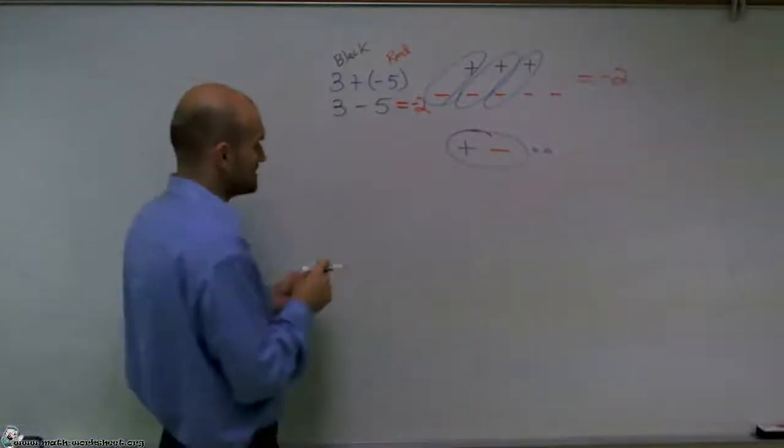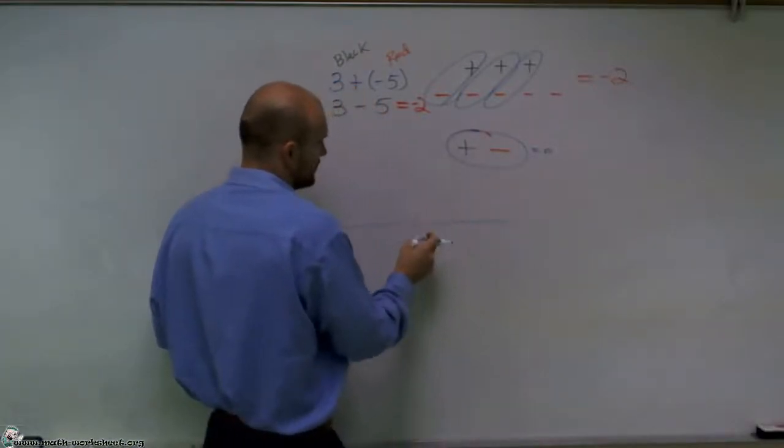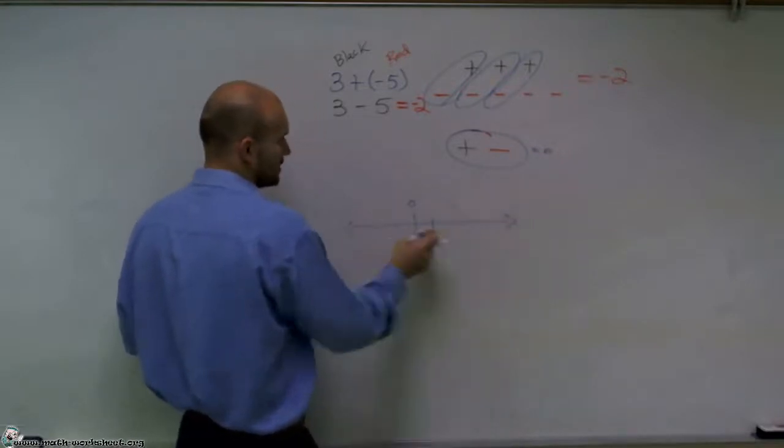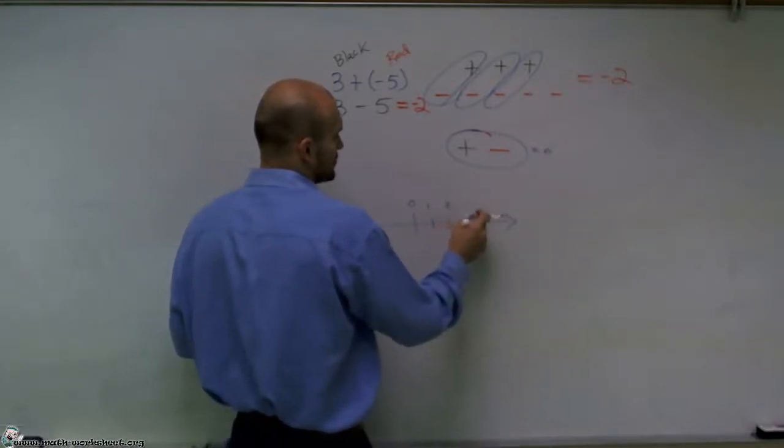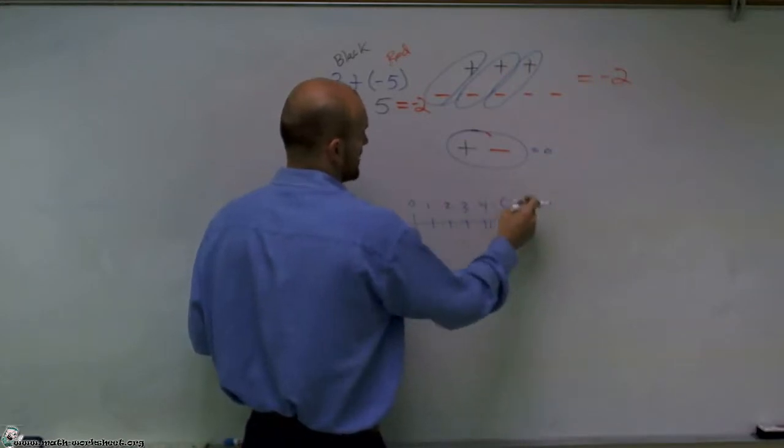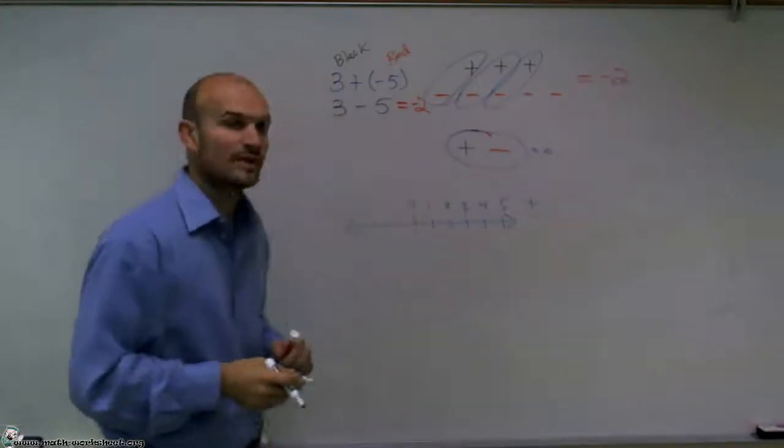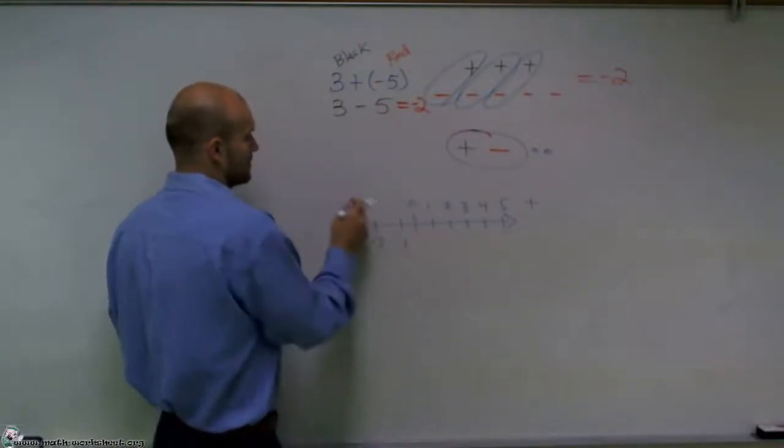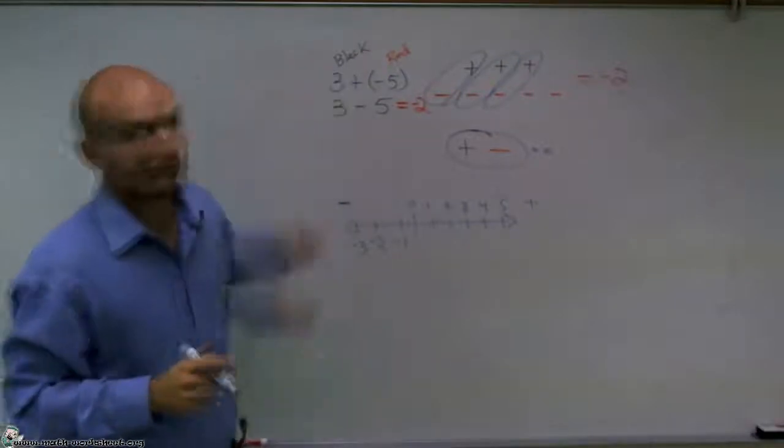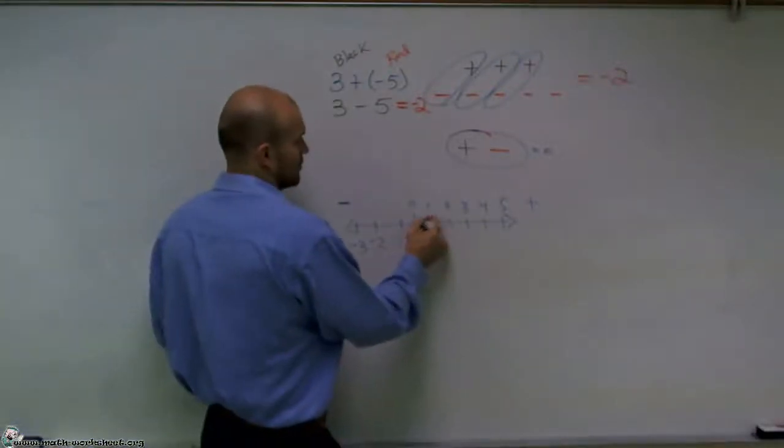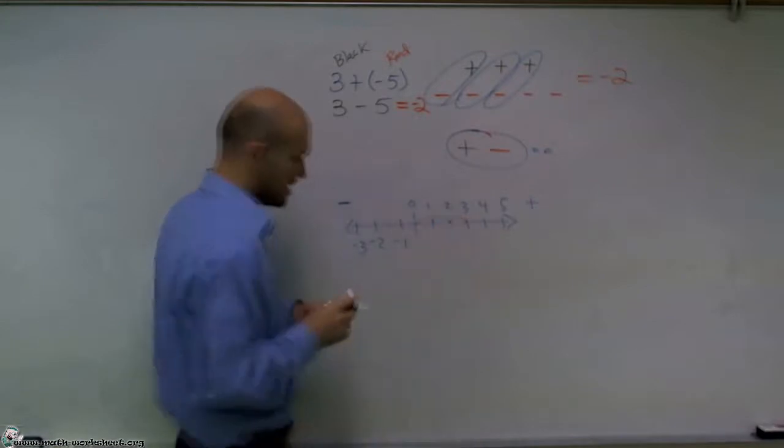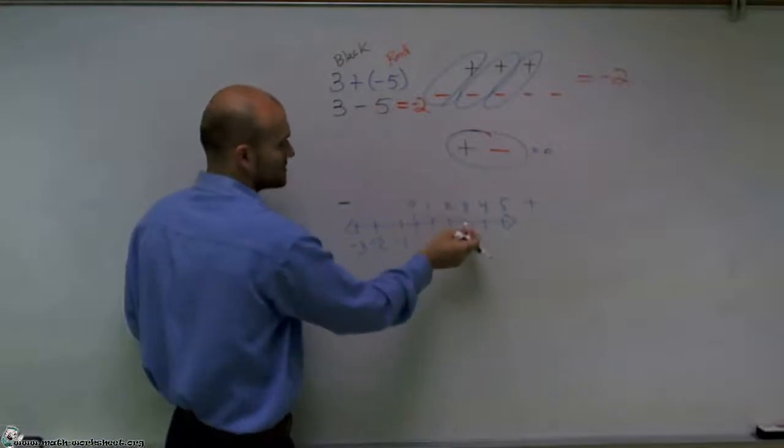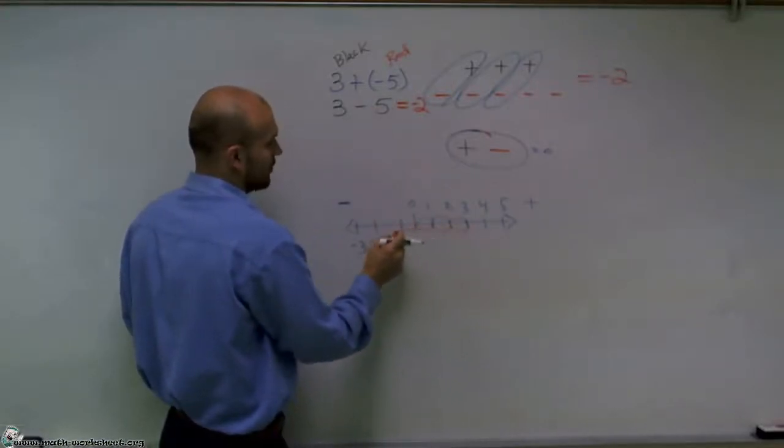One last way I'll represent this is let's take a look at a number line - 1, 2, 3, 4, 5. Let's call the direction to the right positive and to the left negative. So let's pretend you walk three units to the right, 1, 2, 3. But then you walk five units to the left going negative, 1, 2, 3, 4, 5.